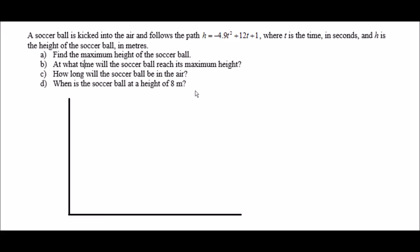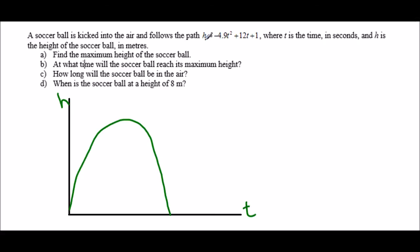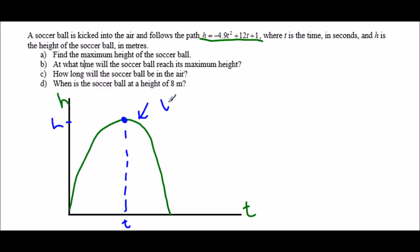Let's think about the actual question. We have a soccer ball being kicked in the air, so it follows a quadratic parabolic path — this axis is the height of the ball and this is the time since it was kicked. The maximum height would be at the top of the parabola. Part A asks for maximum height and part B asks at what time it reaches maximum height — both of those represent the vertex of this parabola. So to answer A and B, I need to find the vertex.